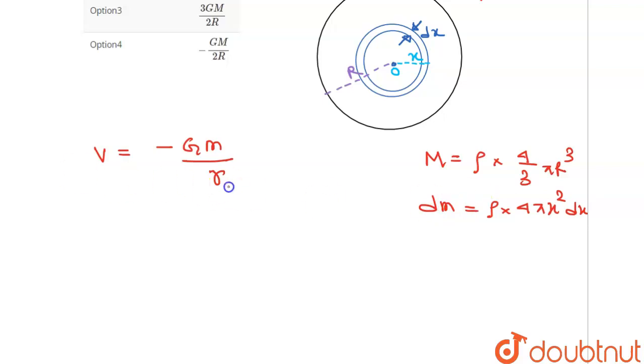So if we had to determine the potential for this very small sheet, we will write dv equals negative of G into dm over x, from 0 to r as we can see.